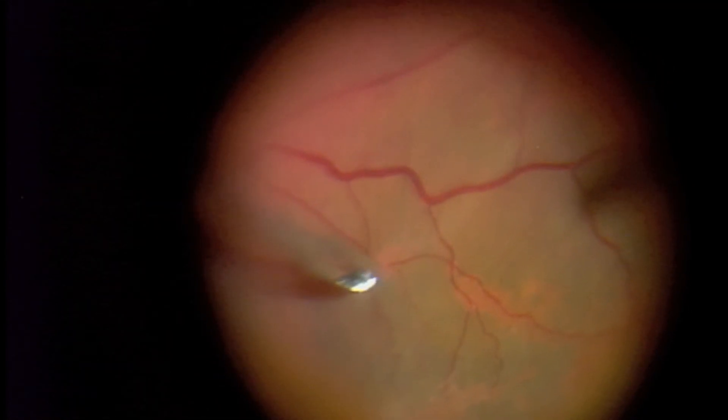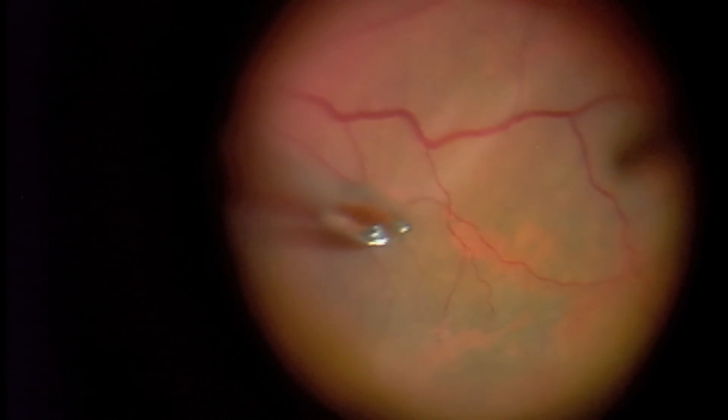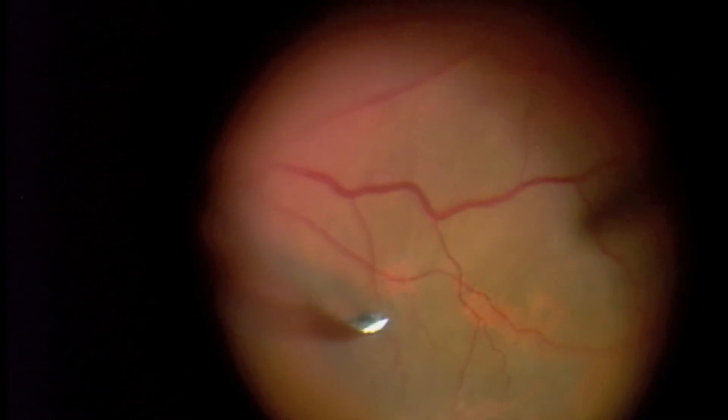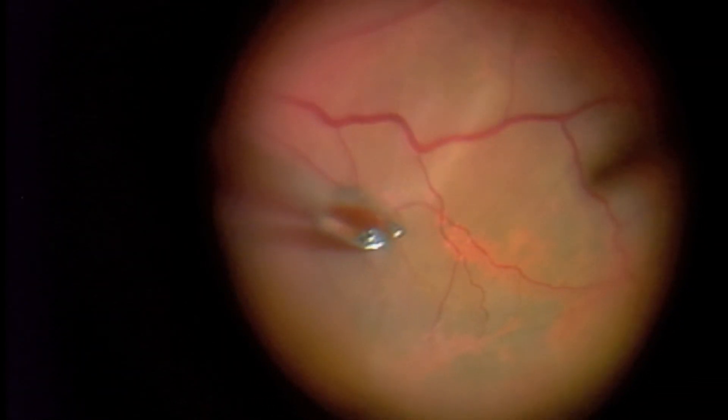So I'm starting to peel the membrane off to the side of the macula. And the membrane usually comes off in one or two sheets as it does here.